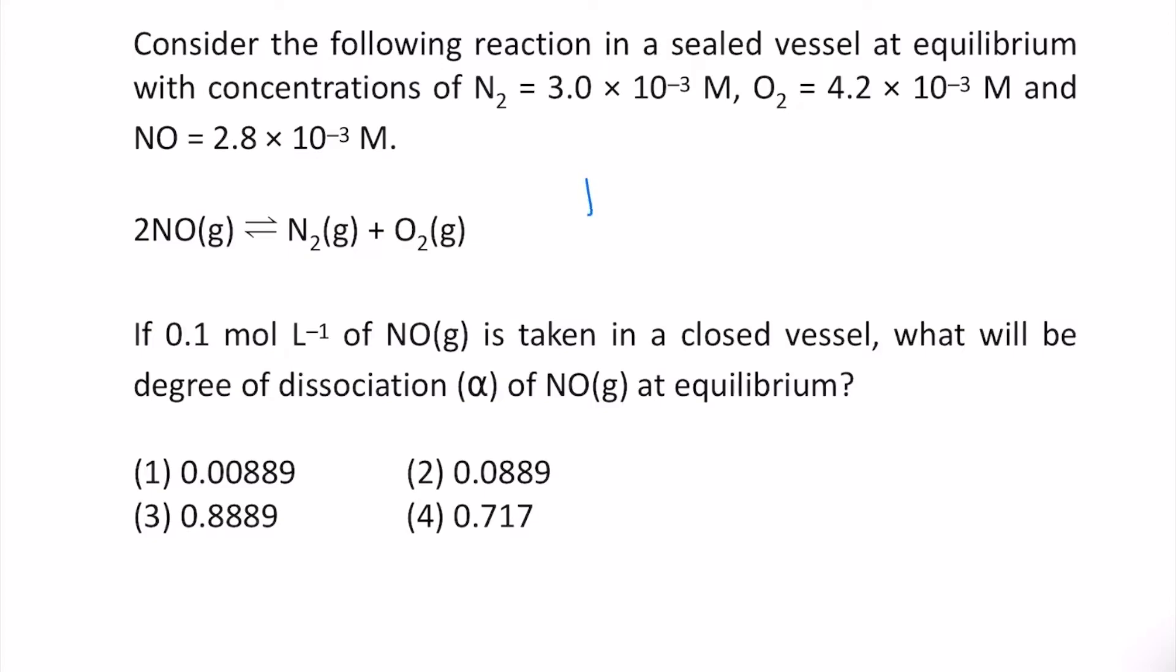We know that Kc is equal to N2 times O2 divided by NO square. So, if we substitute the values then this will be 3 times 10 to the power minus 3 times 4.2 times 10 to the power minus 3 divided by 2.8 times 10 to the power minus 3 times 2.8 times 10 to the power minus 3 because there is a square term.